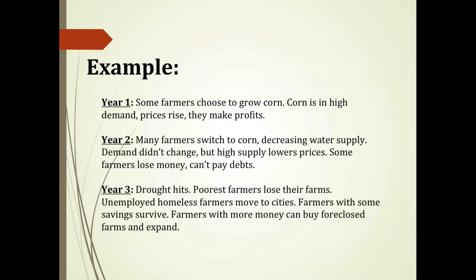In year three, because so many farmers switched to growing corn in year two and used much more water than available — a separate lesson in economics related to scarcity — a drought hits. The poorest farmers lose their farms. The now unemployed and homeless farmers begin moving to cities. Farmers with some savings are able to survive, and farmers with more money can buy foreclosed farms and expand their operations. The government is absent from intervening and saving the farmers that have become losers, employing laissez-faire policy and classical economic theory.